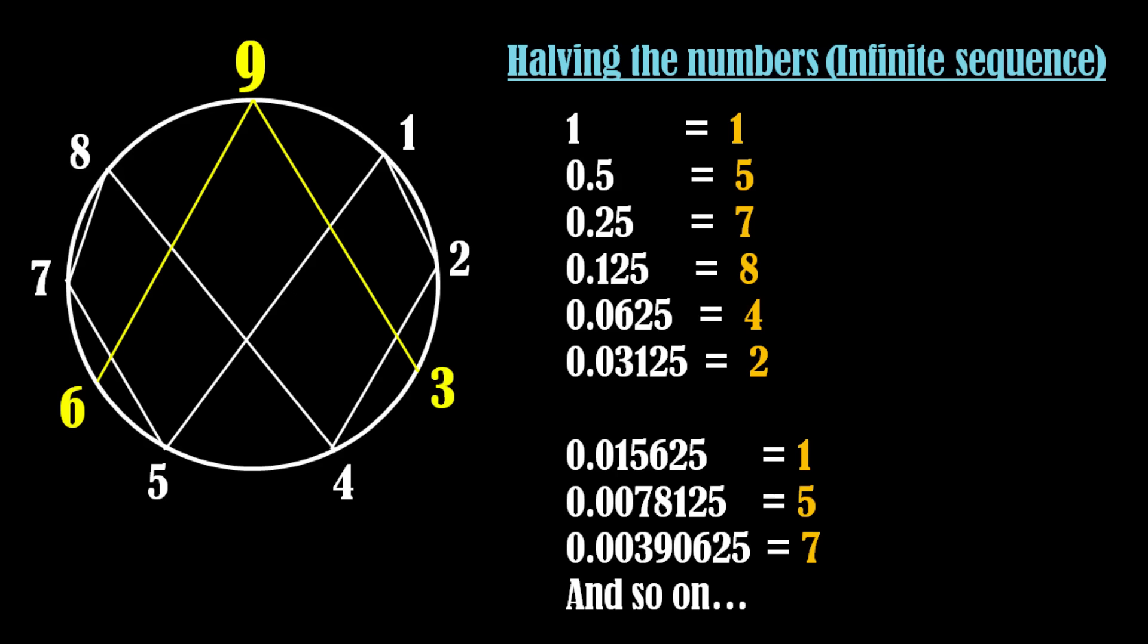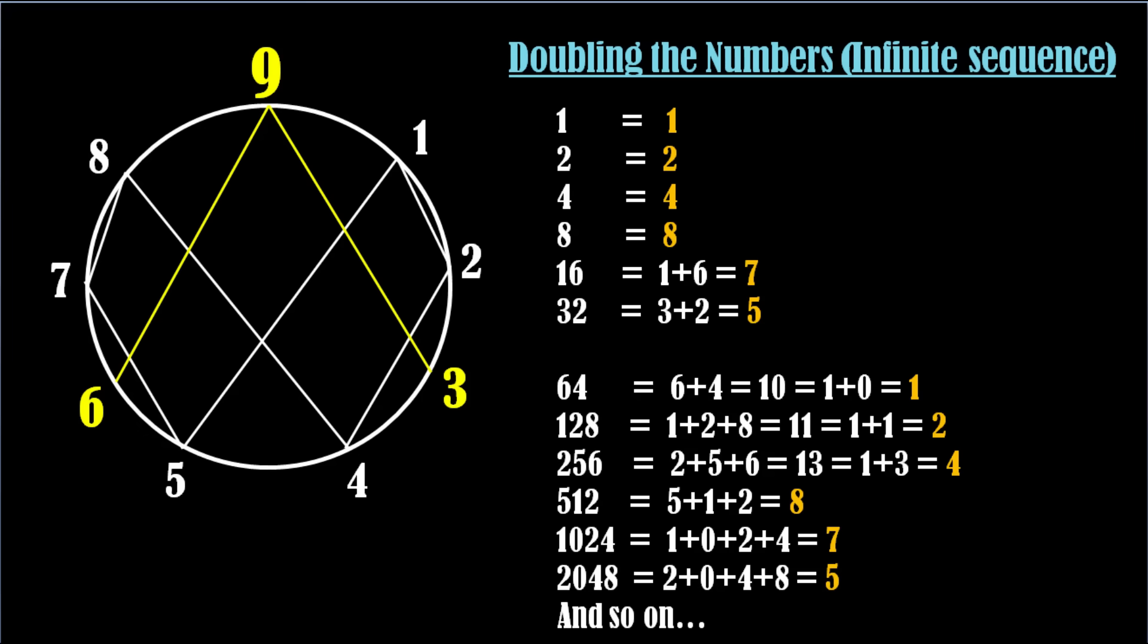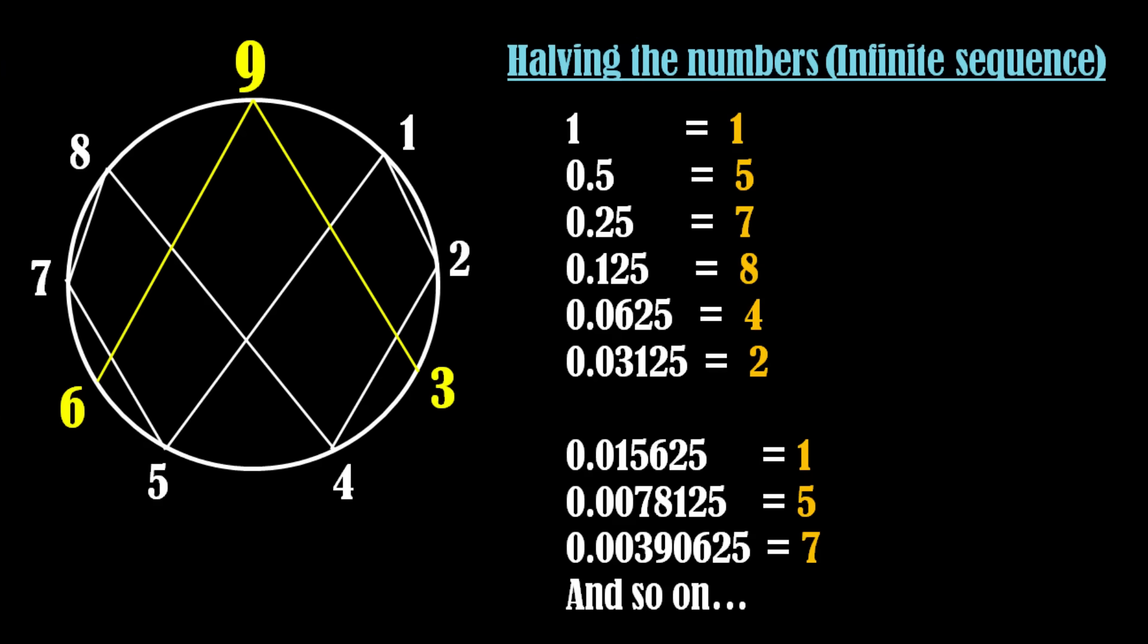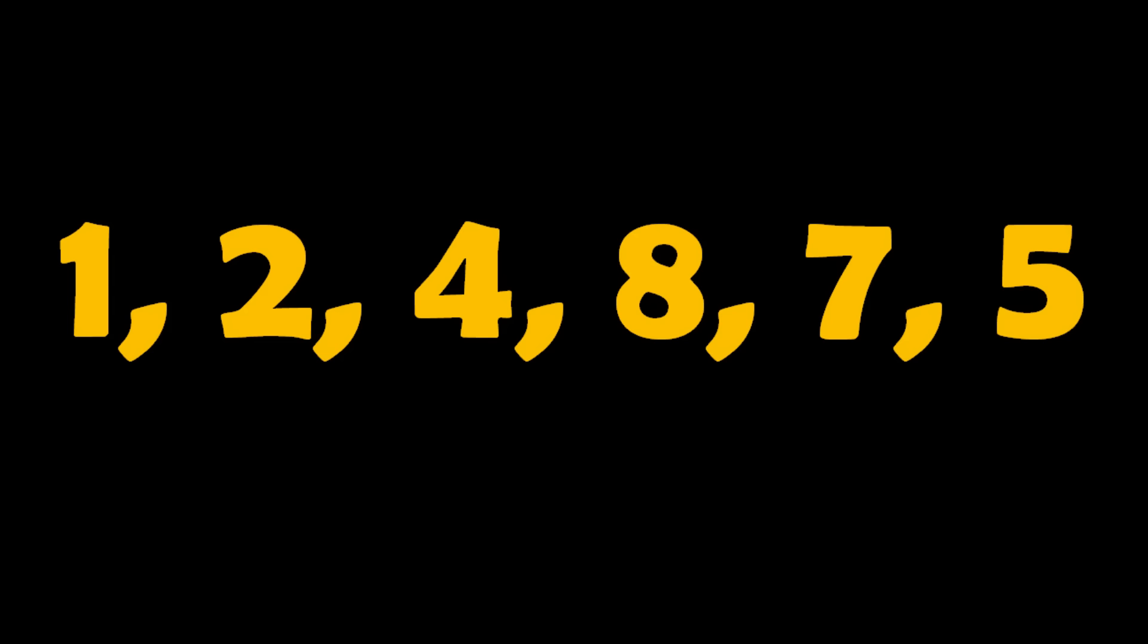You will be surprised to see that this time too we get the same numbers repeatedly that we got in case of doubling the numbers. So in both the cases of doubling and halving the numbers we are getting the same numbers 1, 2, 4, 8, 7 and 5.